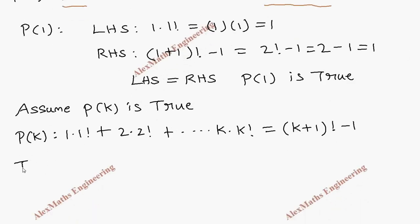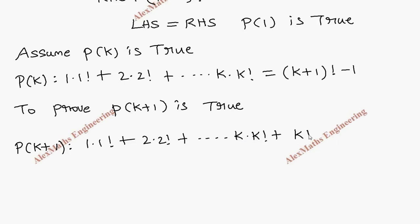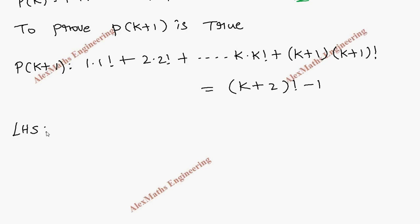To prove P of k plus 1 is true, we write the expression for P of k plus 1: 1 into 1 factorial plus 2 into 2 factorial plus dot dot dot k into k factorial plus k plus 1 into k plus 1 factorial. On the right hand side, substituting n equals k plus 1 gives k plus 1 plus 1 factorial minus 1, which is k plus 2 factorial minus 1.